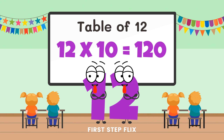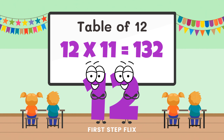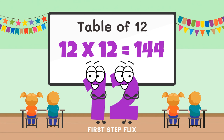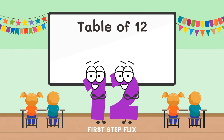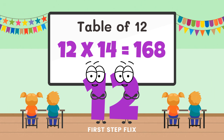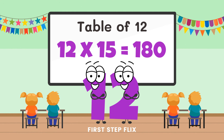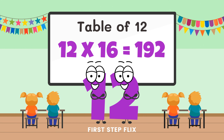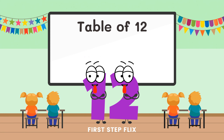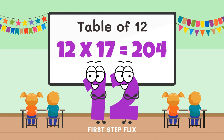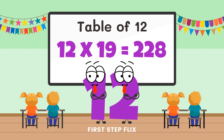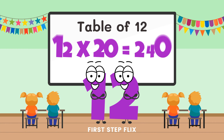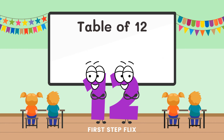12 tens are 120. 12 elevens are 132. 12 twelves are 144. 12 thirteens are 156. 12 fourteens are 168. 12 fifteens are 180. 12 sixteens are 192. 12 seventeens are 204. 12 eighteens are 216. 12 nineteens are 228. 12 twenties are 240. Let's repeat one more time.